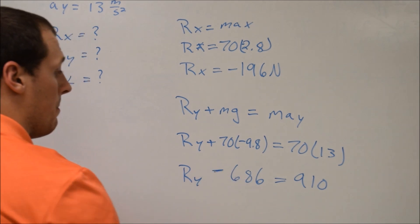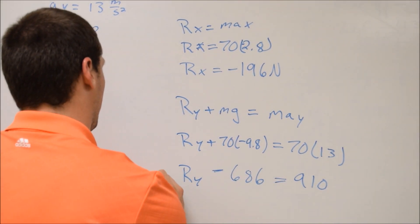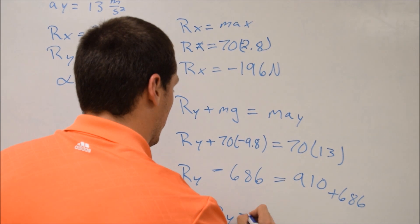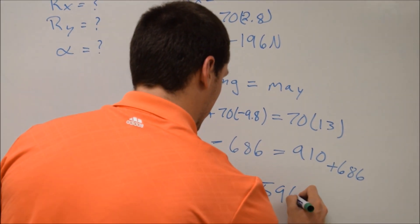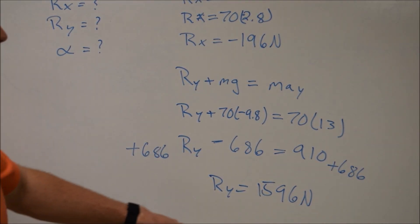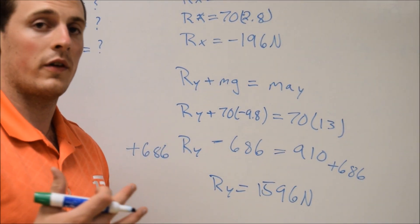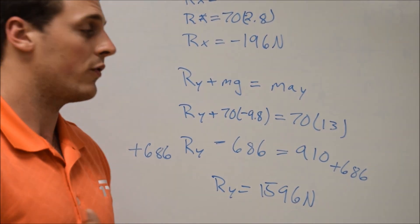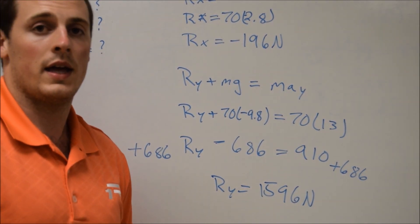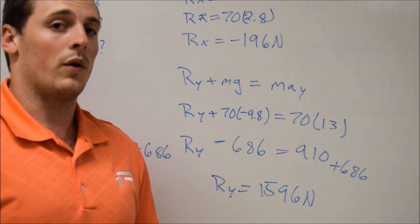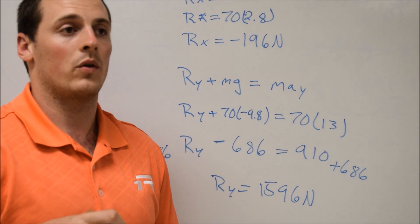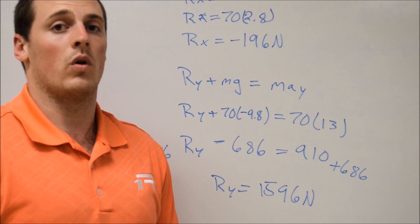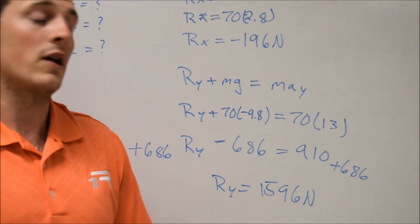Since Ry minus 686 equals 910, we add 686 to both sides, giving us Ry equals 1596 newtons. Some of these problems have large numbers for newtons and that's okay. To put it in context: someone weighing 100 kg standing on the ground exerts about 981 newtons just by standing there, so a force like this is perfectly acceptable in any physical activity.